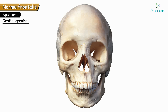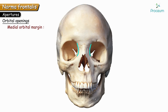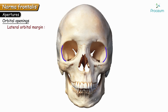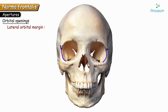Let's see the features of the other two margins. The medial orbital margin is formed by two bones: superiorly by the frontal bone, and inferiorly by the frontal process of the maxillary bone. The junction between these two bones is called the frontomaxillary suture. The lateral orbital margin is also formed by two bones: the upper part by the frontal bone, and the inferior part by the zygomatic bone. The junction between these two bones is called the fronto-zygomatic suture.